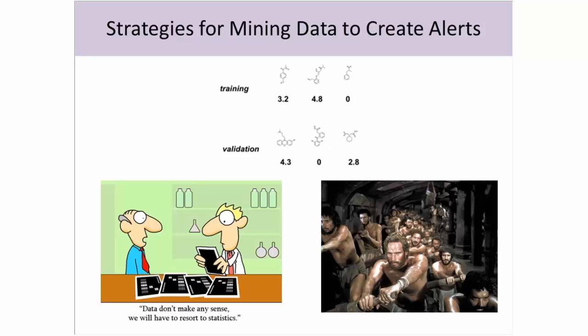How do you define chemical similarity? You have to build a profiler. A profiler consists of chemical structure alerts — fragments of molecules that define something about those molecules that makes them similar. Sounds easy. It's pretty challenging.